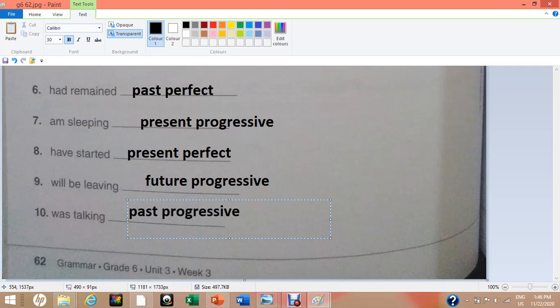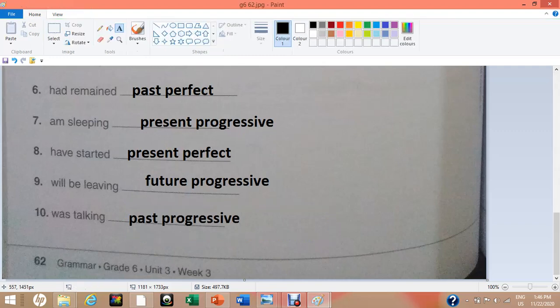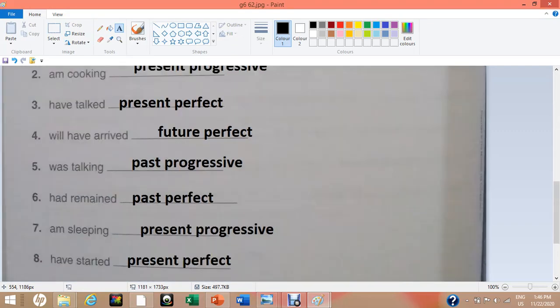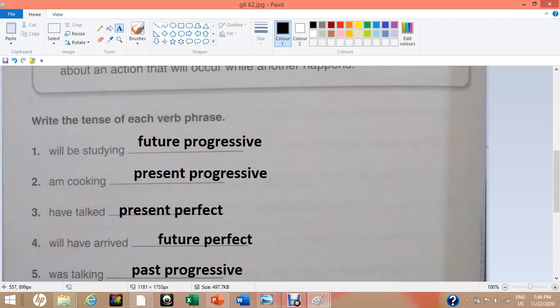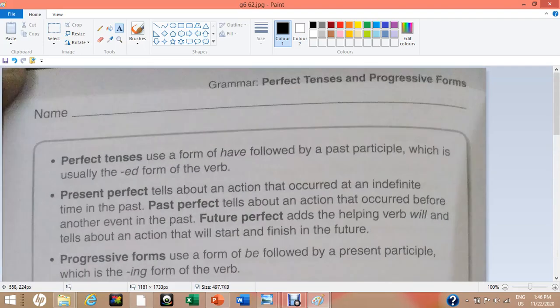My dear students, so far we have concluded our exercises about progressive and perfect tenses. And also we discussed what is the basic definition of verb phrase. I hope you will have written the correct answers. See you next time with a new lesson. Till then, bye bye. Stay home, stay safe.